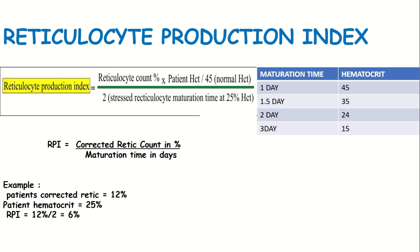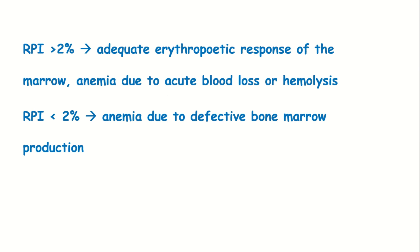So, the RPI equals corrected reticulocyte count divided by the maturation time corresponding to the patient's hematocrit. For example, if corrected reticulocyte count is 12% and patient hematocrit is 25% (corresponding maturation time is 2 days), RPI equals 12 divided by 2, which is 6%. Normally, RPI greater than 2% indicates adequate erythropoietic response - the bone marrow erythropoietic activity is normal. In this case, elevated RPI can be due to blood loss, hemolysis, or other bone marrow activity. This is all about reticulocyte count. If you have any doubts, comment on this video. Thank you.